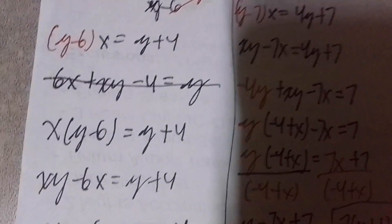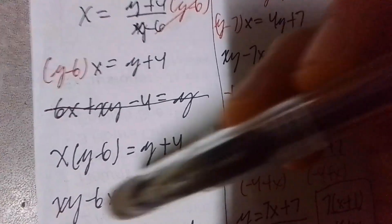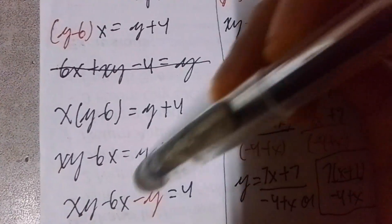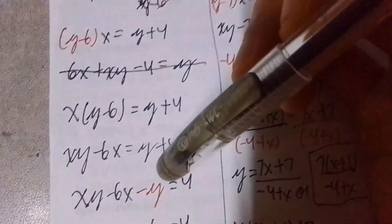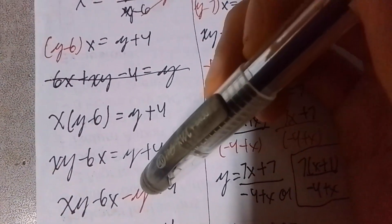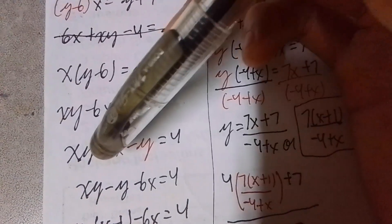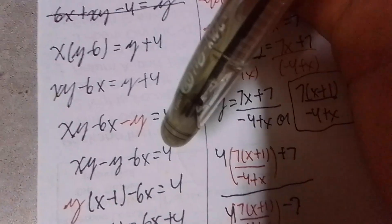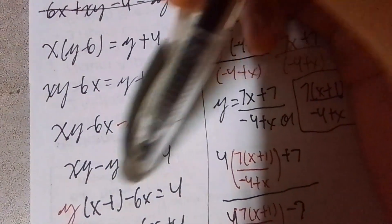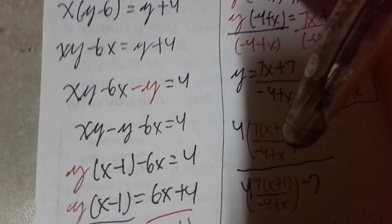I moved the y to this side. So I have to bring the y here to the left side. I subtracted y — you can see the red. And then, thanks to the commutative property of addition, I bring this negative y here and this negative 6x here. When I factored out the y, it's just x minus 1. And then, minus 6 is equivalent to 4 — the 6x brought to the other side. So therefore, it's y times x minus 1 is equivalent to 6x plus 4.